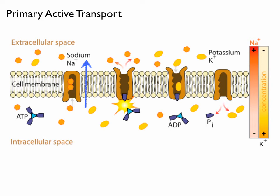Potassium ions are going to enter the cell, but again against the concentration gradient. The same trap door molecule can bring potassium across the cell membrane — the potassium molecules enter the trap door and cause it to reset to its original configuration with the door open inside the cell. The key point is that primary active transport uses ATP directly to pump molecules one way or the other across the cell membrane, always against the concentration gradient.